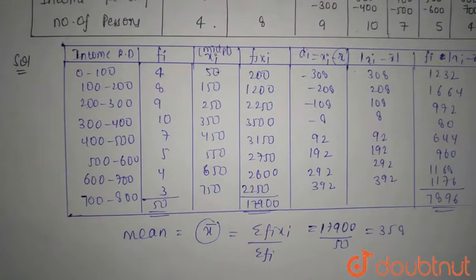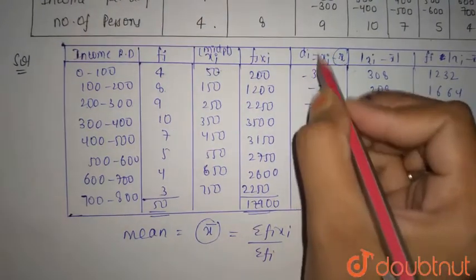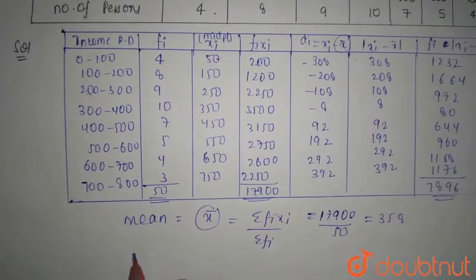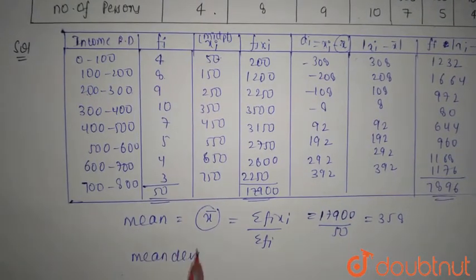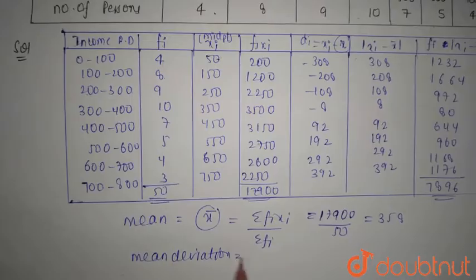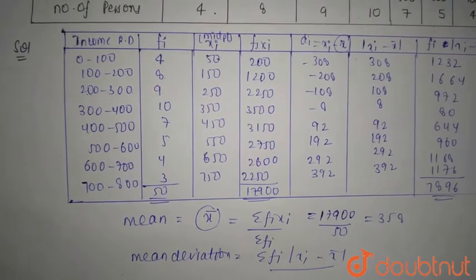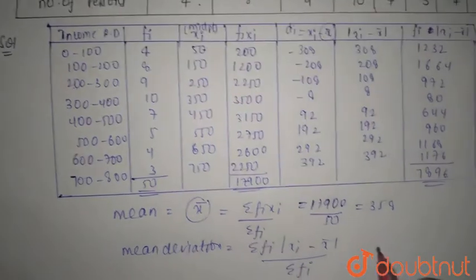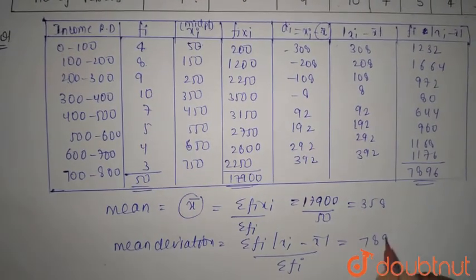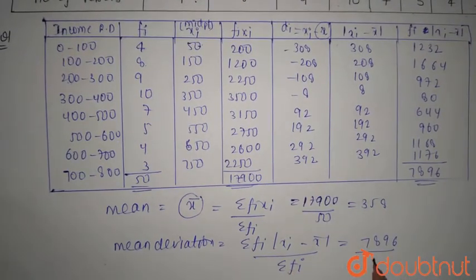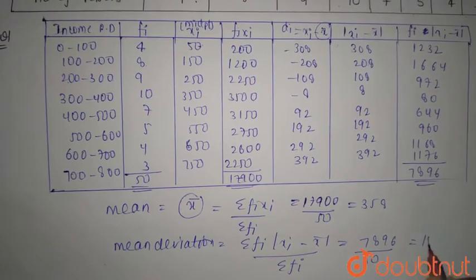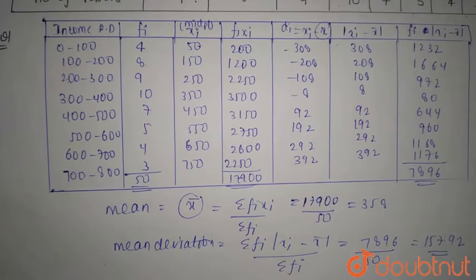Mean deviation is summation of fi |xi - x̄| divided by summation of fi. This will be 7896 divided by 50, which equals 157.92. This is the mean deviation. Thank you.